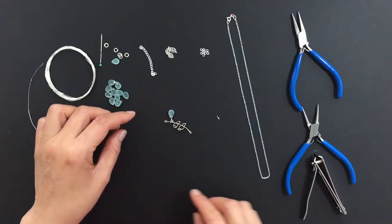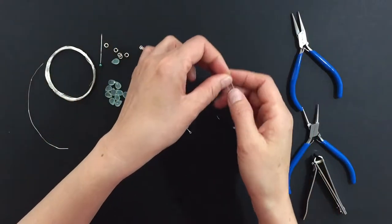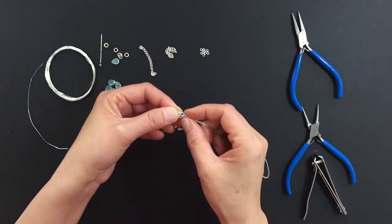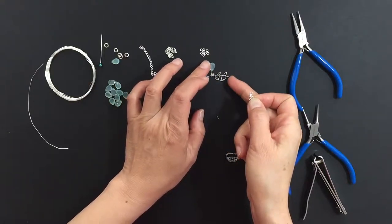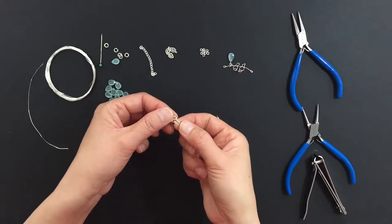Next, we'll attach our lovebird connector to the center of our 16 inch Italian sterling silver chain. Line up the top ends of the chain to find the center.